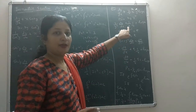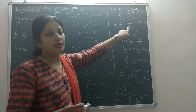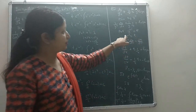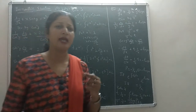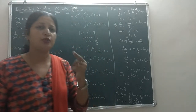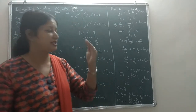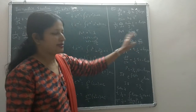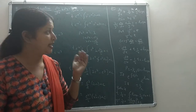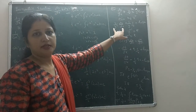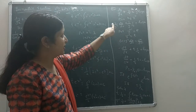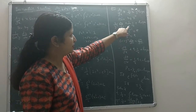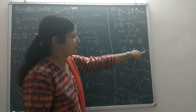After dividing by y², the remaining y term becomes 1/y. So we substitute 1/y = t. The first term gives a negative sign. With this substitution, the equation becomes: minus dt/dx plus t·(1/x) equals log(x), and 1/y = t.